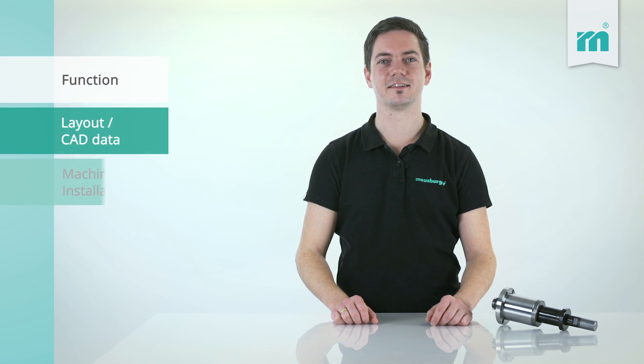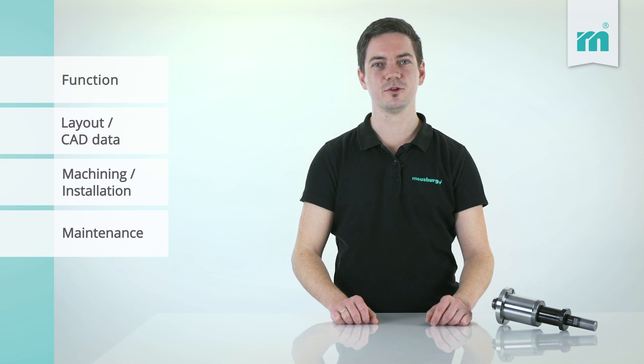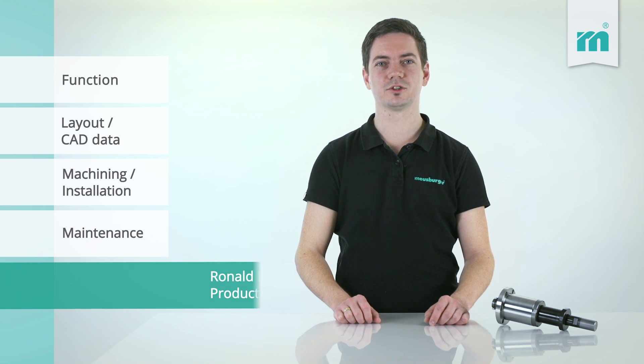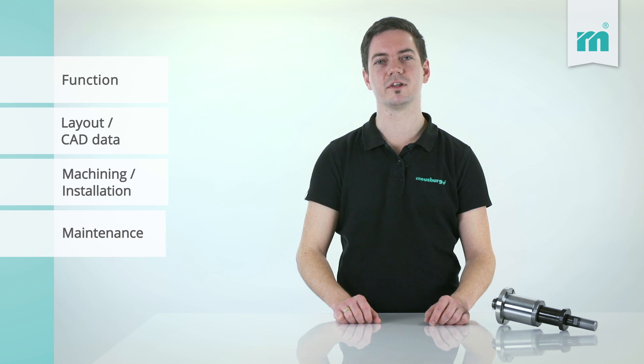Welcome to the Meussburger Technical Tip. Today we will show you the two-stage ejector leading type E1860, the ideal solution for using complicated demoulding operations.